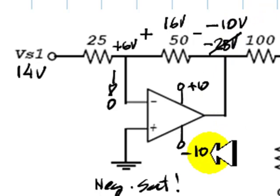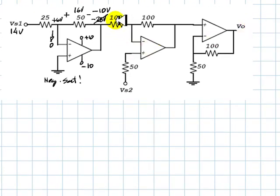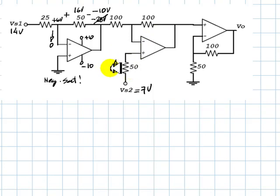That takes care of that part of the exercise, but we still need to find what is V0. The voltage here is negative 10. At first, we assume that this op-amp is not saturated. This voltage is 7 volts, this voltage is negative 10, and if we assume no saturation, because there is negative feedback, the current here is 0, the voltage here is 7 volts, and then this voltage would also have been 7 volts.